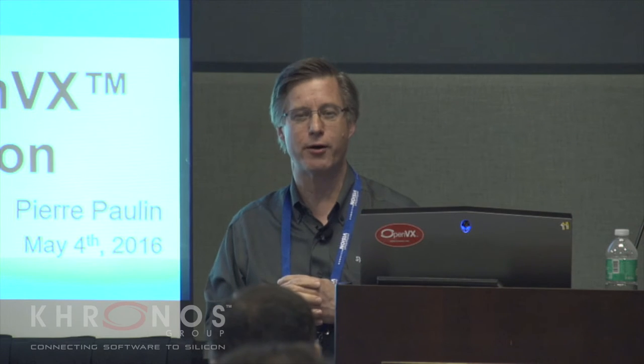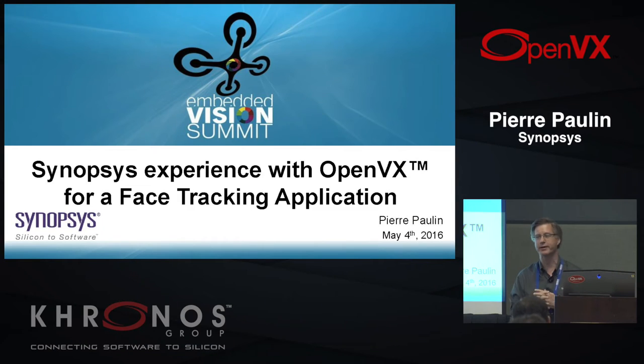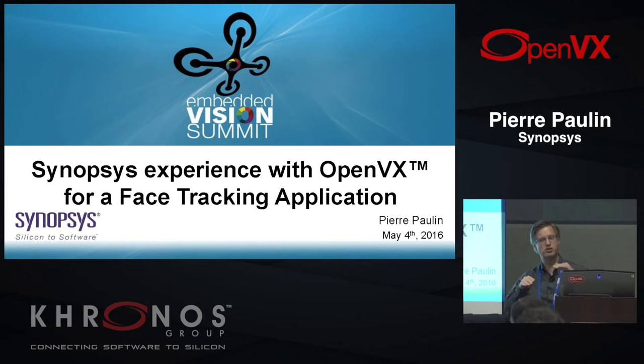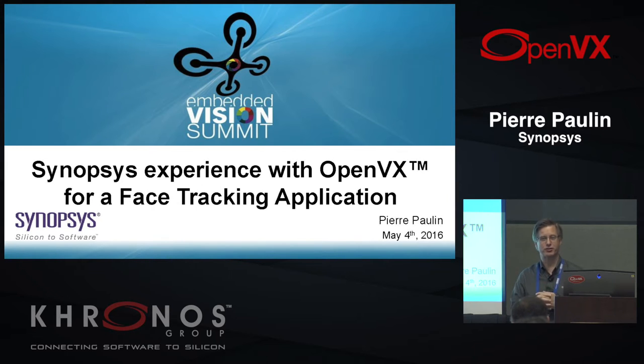Let me introduce Synopsys and the context here. Synopsys has been working for the last two to three years on an embedded vision processor for low-cost, low-power, low-area applications — specifically two to three millimeters square, 100 milliwatts, in 28 nanometer HPM. That's a very different category from a GPU. Some of the presentations we've just heard are in a different space. We're looking at video surveillance, ADAS, and a range of applications.